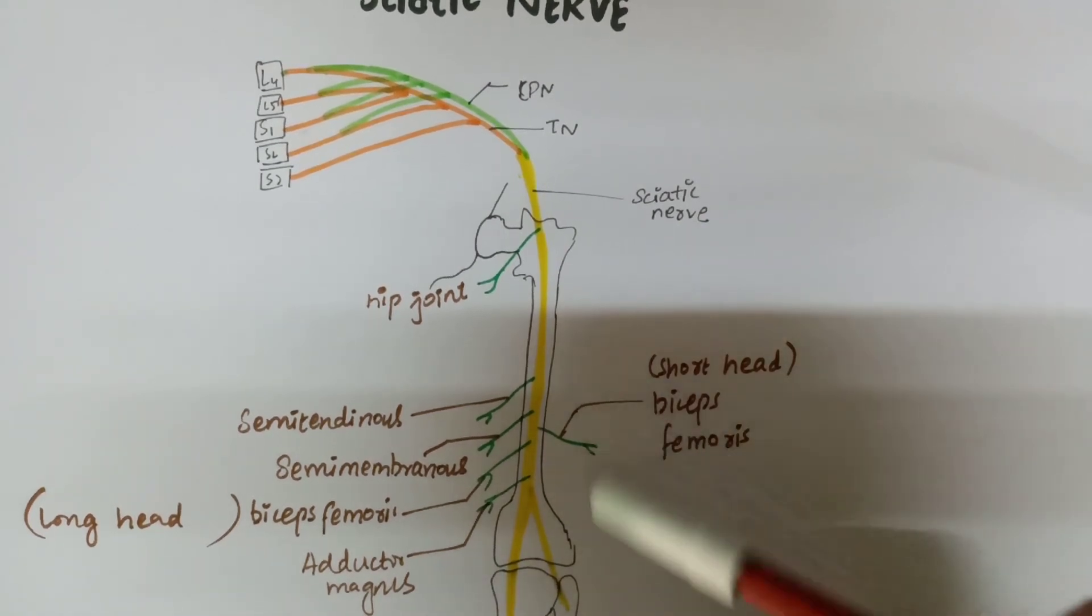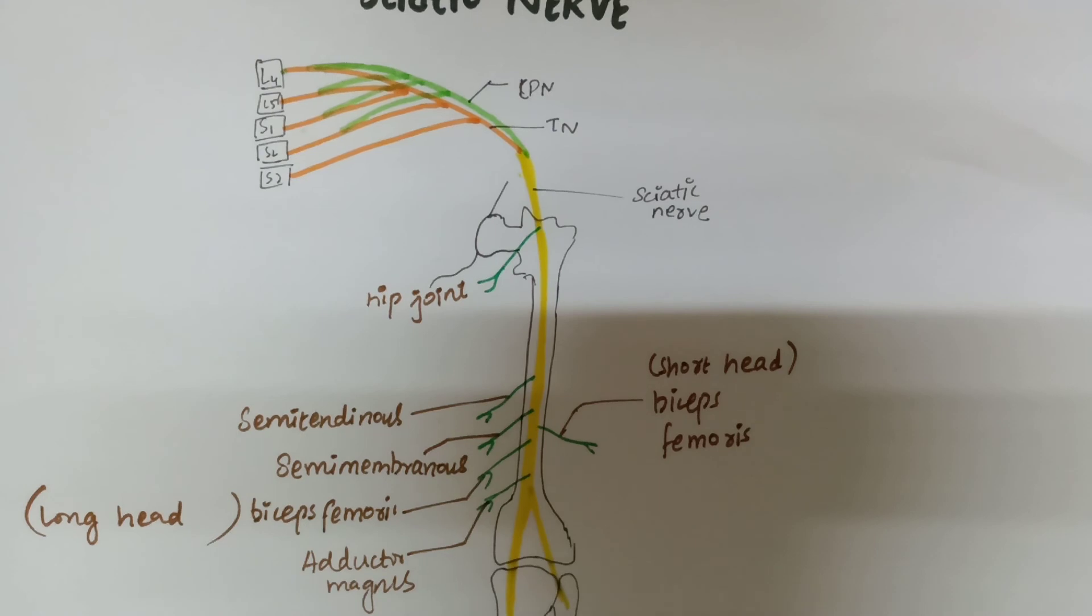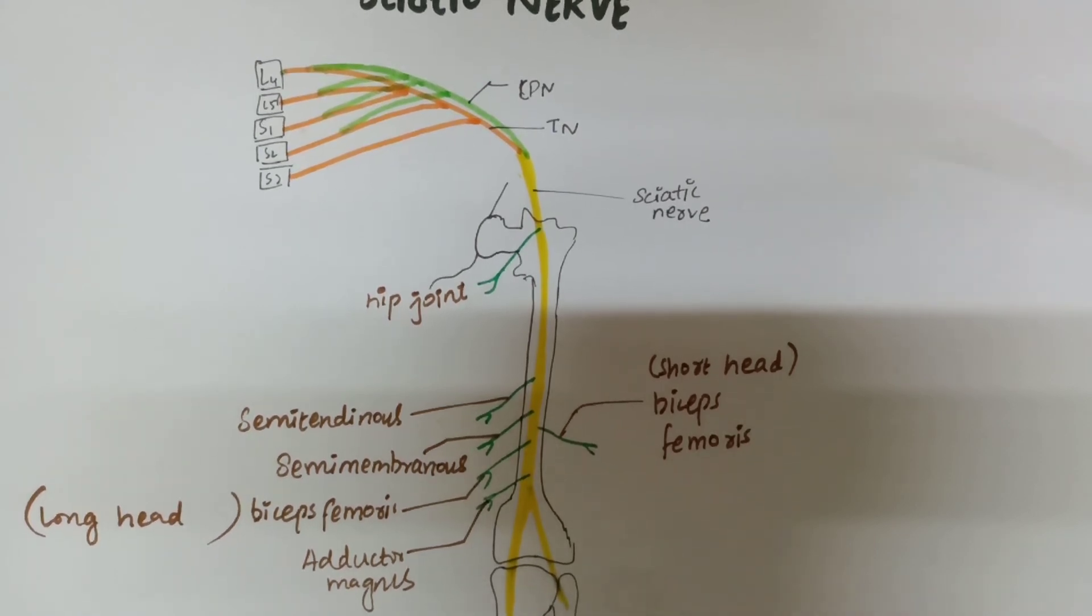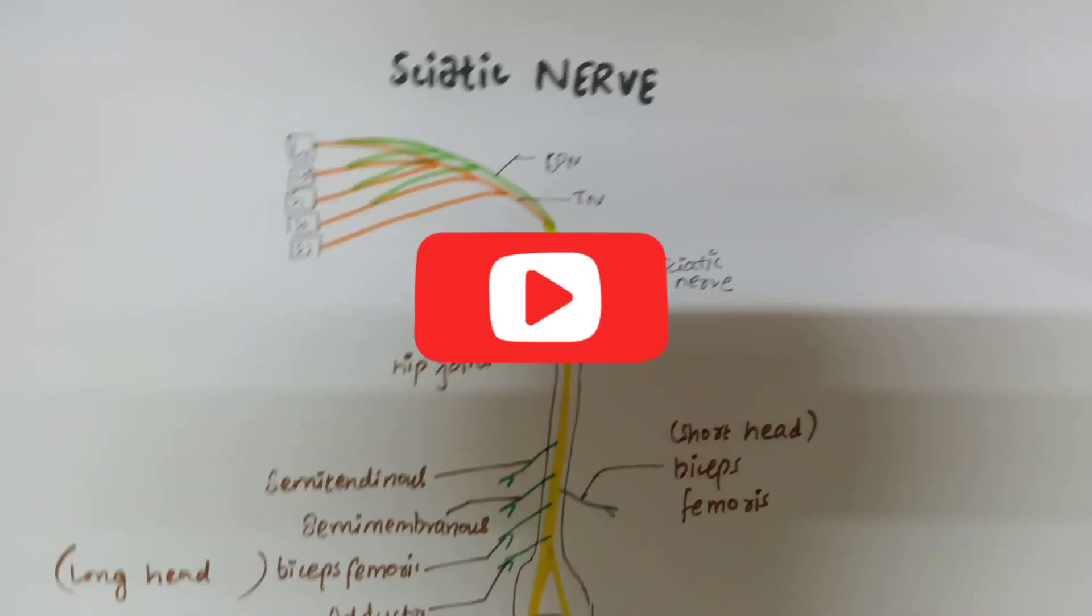And it terminates by giving off two branches: on the medial side the tibial nerve, and on the lateral side the common peroneal nerve. This is all about the sciatic nerve.